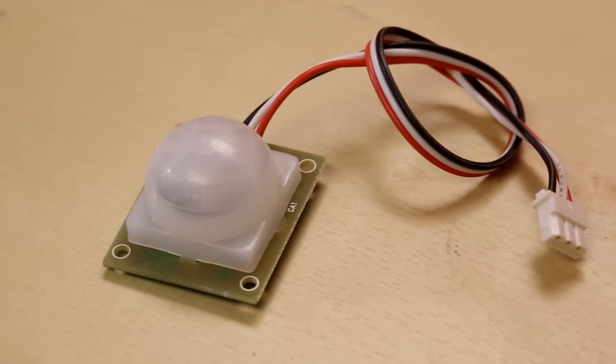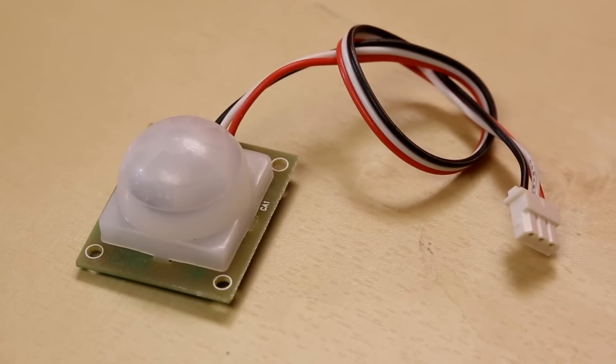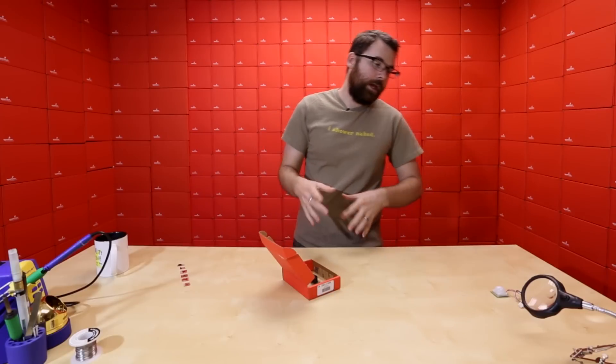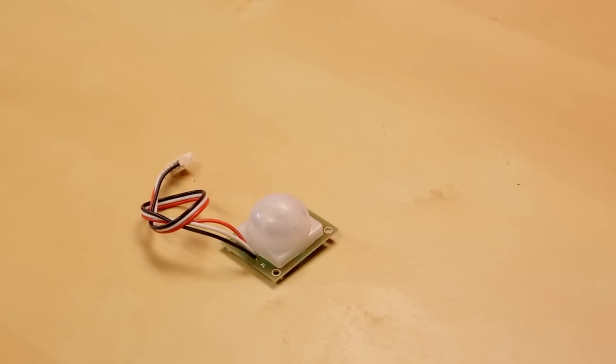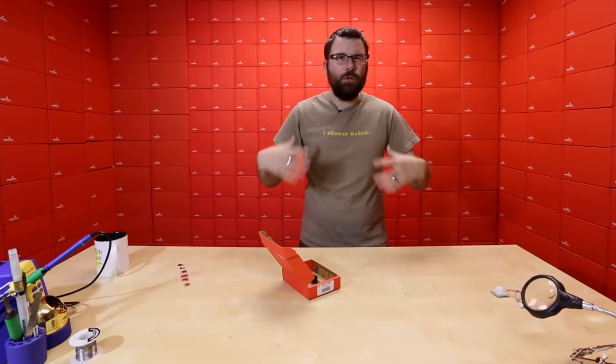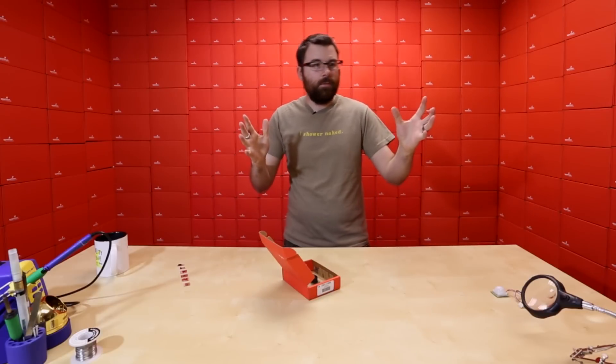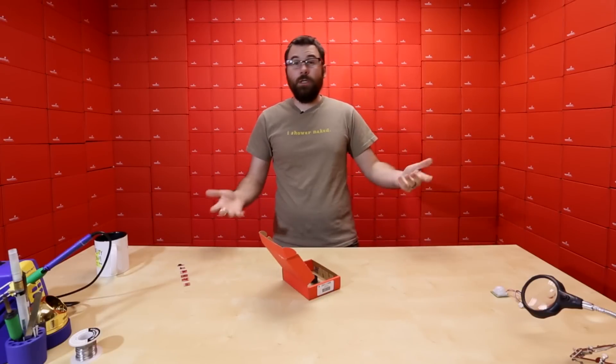This guy is a PIR motion sensor. This is something that you would see in an alarm or something like that. When you turn this on, it takes a few seconds, and if everything is still, it kind of takes like a capture or a screenshot of the room. And if something moves, it basically triggers an alarm pin.